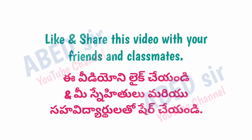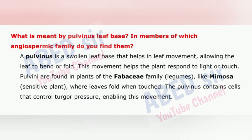Next important question: What is meant by pulvinus leaf base? In members of which angiospermic family do you find them? A pulvinus is a swollen leaf base that helps in leaf movement, allowing the leaf to bend or fold. This movement helps the plant respond to light or touch. Pulvinus are found in plants of the Fabaceae family (legumes), like Mimosa (sensitive plant), where leaves fold when touched. The pulvinus contains cells that control turgor pressure, enabling this movement.